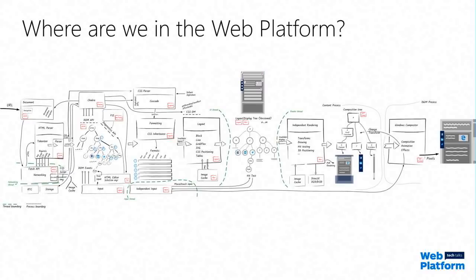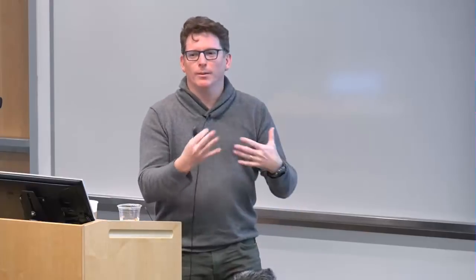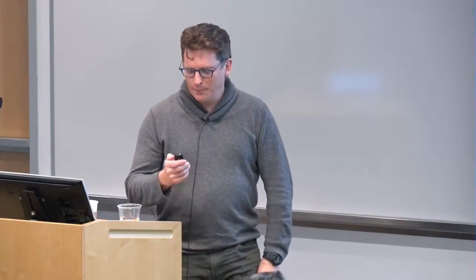You'll recognize this diagram from Christian's previous talk about the overall Edge architecture picture, and we are right there in the little corner. Chakra is the component that touches a lot of the other pieces in Edge. The DOM is probably the part where we interface the most, and we're going to dive into that now.